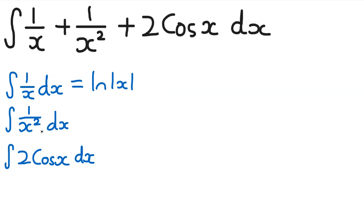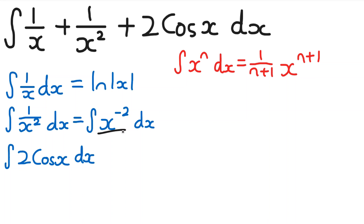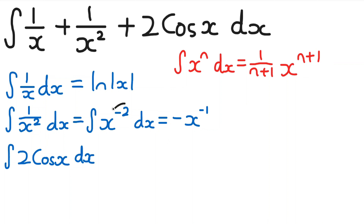For the second term, 1 over x², we rewrite this as x to the power of minus 2 using index laws. This is now in the form x to the power of n, so it's Year 1 integration. We apply the rule: multiply by 1 over (n+1) and raise to the power n+1. So it's 1 over (−2+1) times x to the power of (−2+1), which is −1 times x^(−1), giving us minus 1 over x.